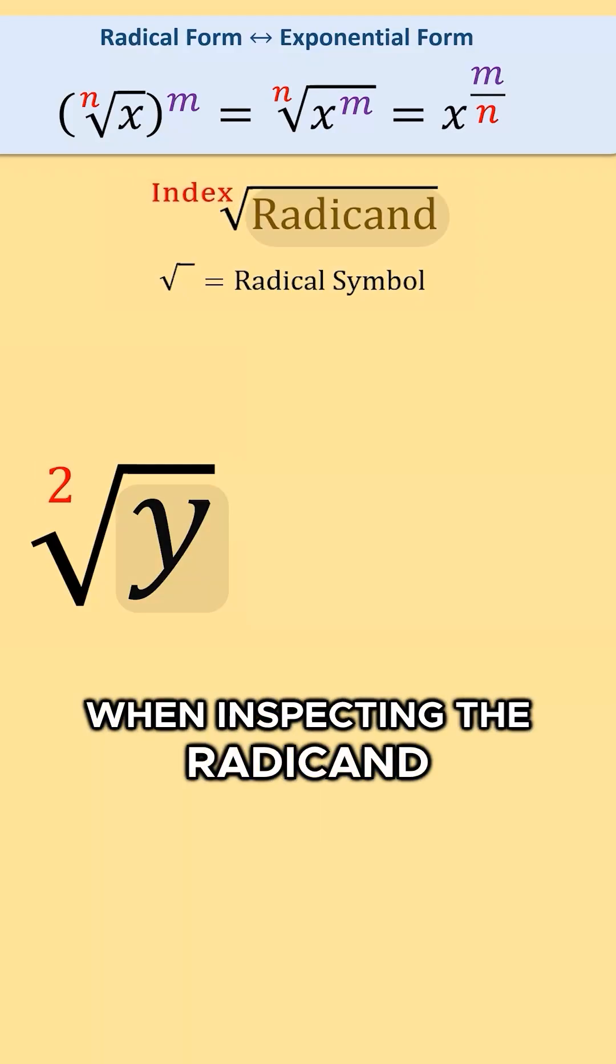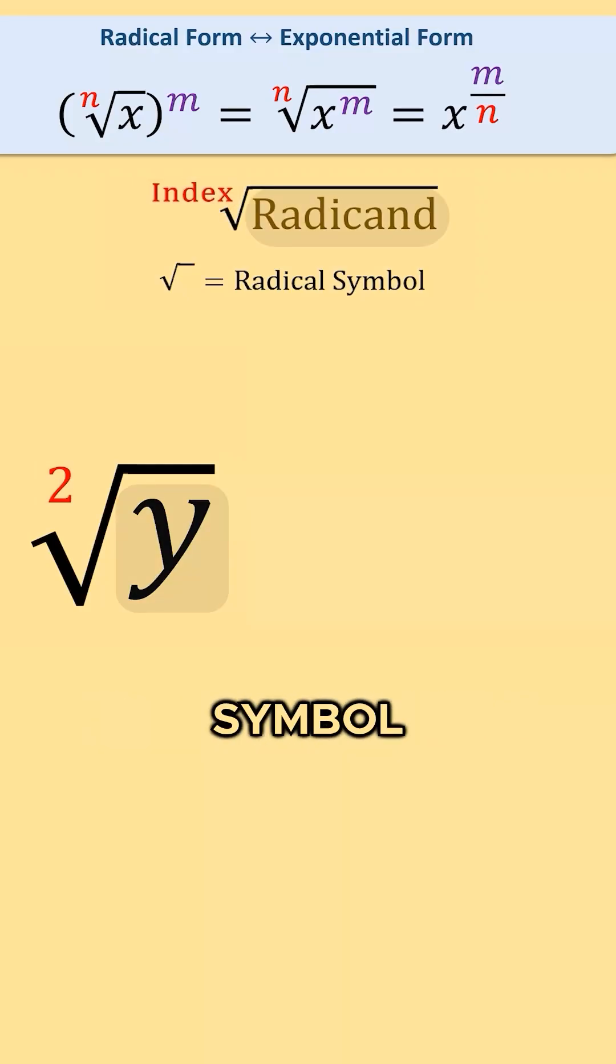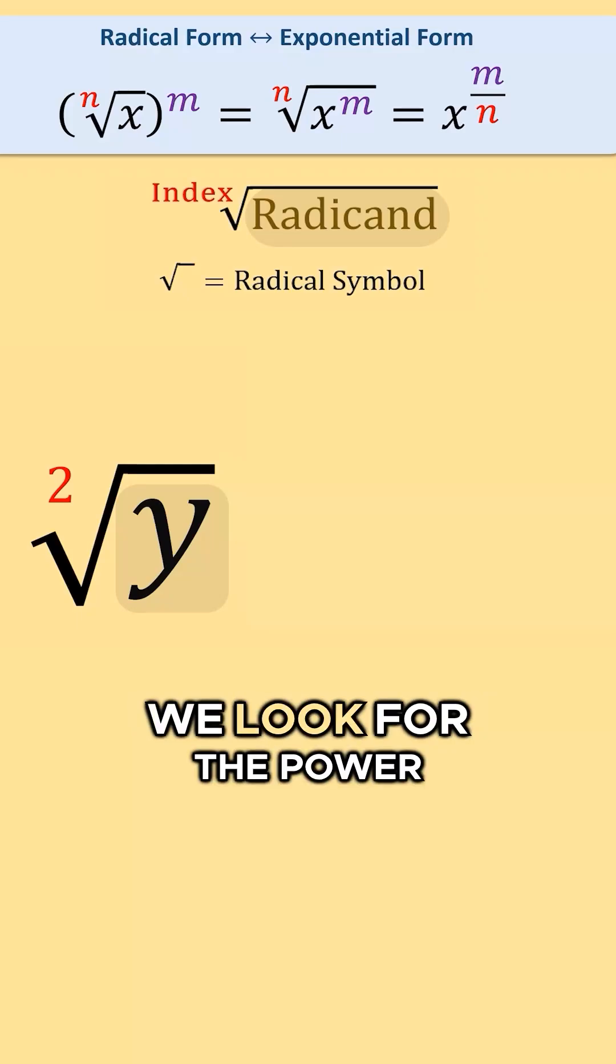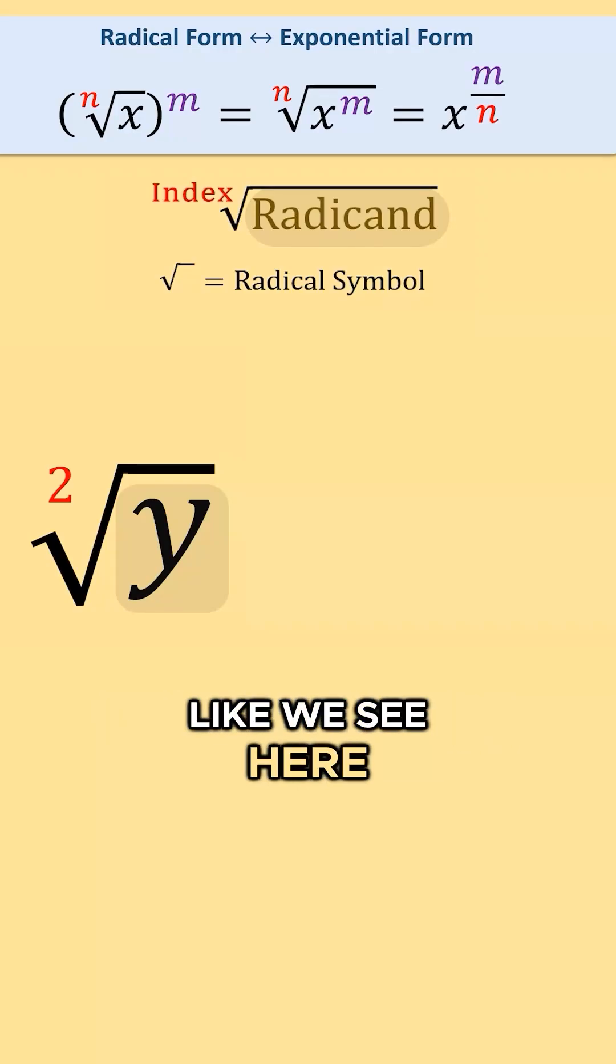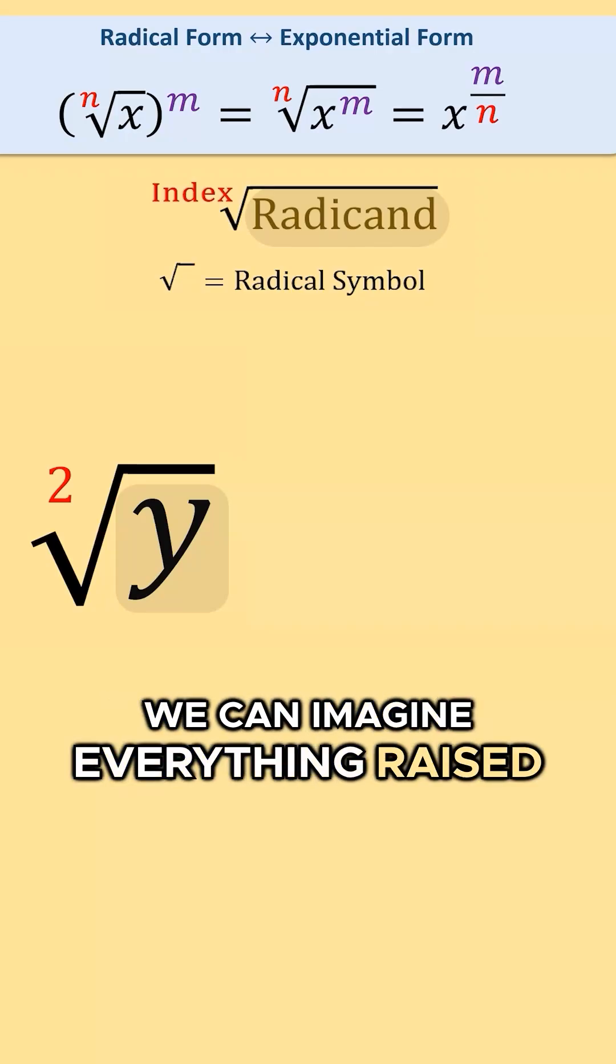When inspecting the radicand here, everything under the radical symbol, we just see y. We look for the power that everything grouped together under the radical is raised to. When no power exists, like we see here, we can imagine everything raised to the first power.